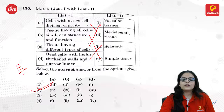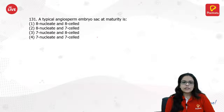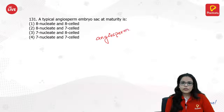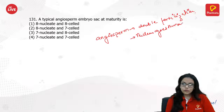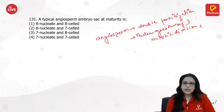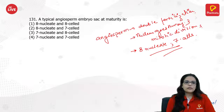A typical angiosperm embryo sac at maturity — angiosperm is where we find double fertilization. The nucleus goes through three mitotic divisions, so when it undergoes three mitotic divisions it becomes eight nucleate and seven cells.